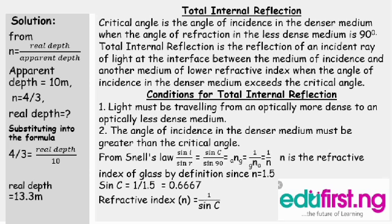From Snell's law, sine i over sine r equals sine c over sine 90. Since sine 90 equals 1, sine c equals 1 over n, where n is the refractive index of glass. By definition, since n equals 1.5, sine c equals 1 over 1.5, which equals 0.67. Hence, the refractive index n is given by 1 over sine c.